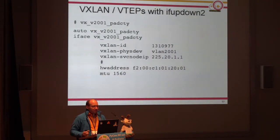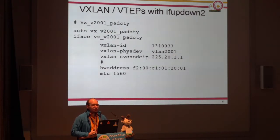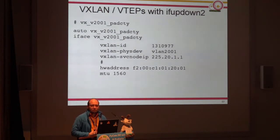One example of how this looks: configuring a VXLAN interface called VTEP — VXLAN tunnel endpoint — looks like this. This would be something we need to generate later on. It's a bunch of text, so nothing really fancy.